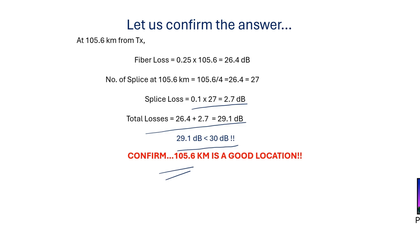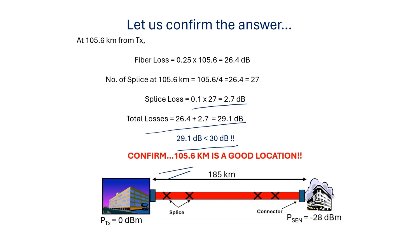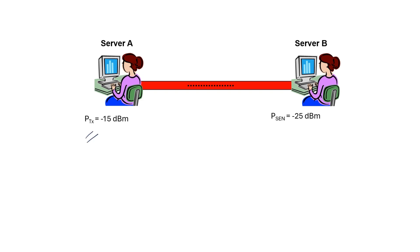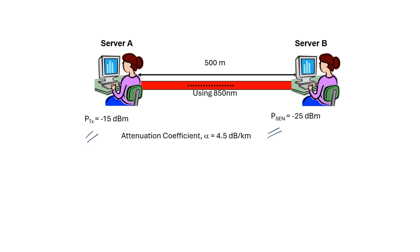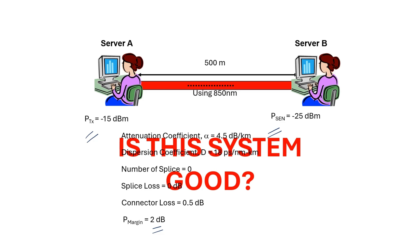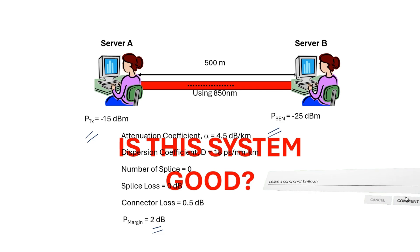So 105.6 km is the correct location for the inline amplifier. The final setup is: transmitter, splice, connector, inline amplifier at 105.6 km. To cross-check your knowledge, solve this practice problem: Server A to Server B, transmitted power minus 15 dBm, receiver sensitivity given, distance 500 m, fiber at 850 nm, attenuation 8.5 dB/km, dispersion coefficient given, number of splices zero, connector loss 0.5 dB, power margin 2 dB. Is the system good or bad? Write your answer in the comments. Thanks for listening and best of luck for your INSEM exam.